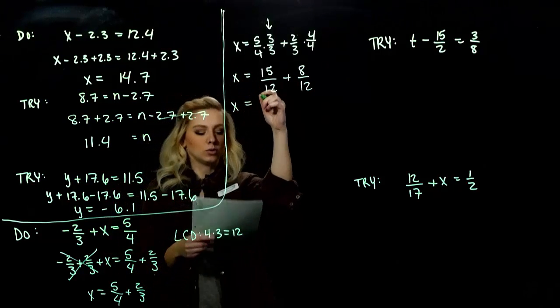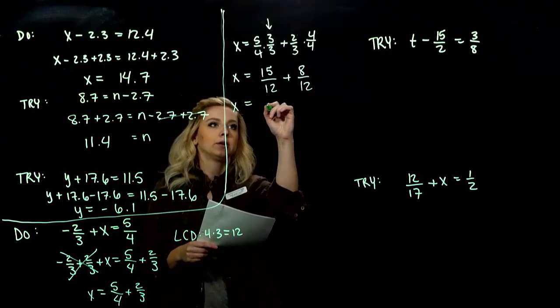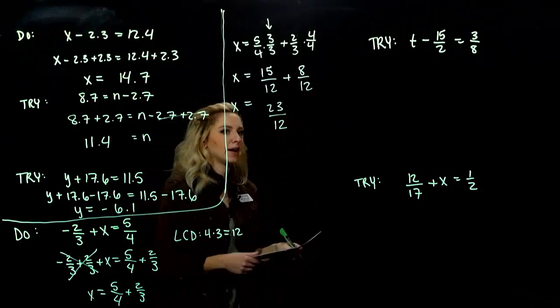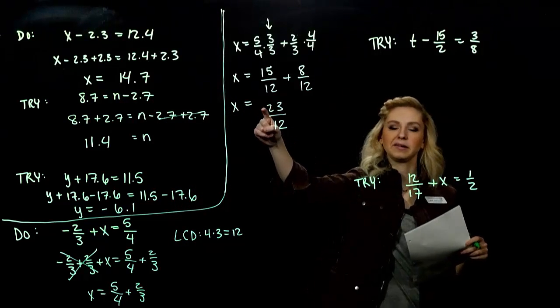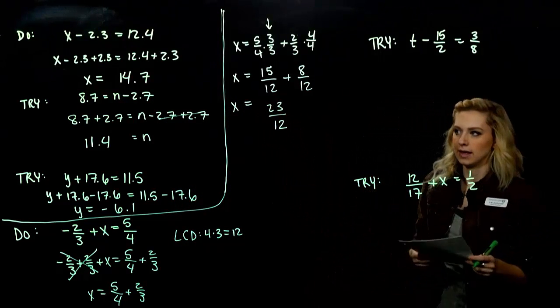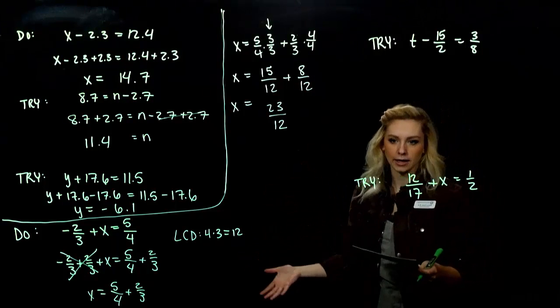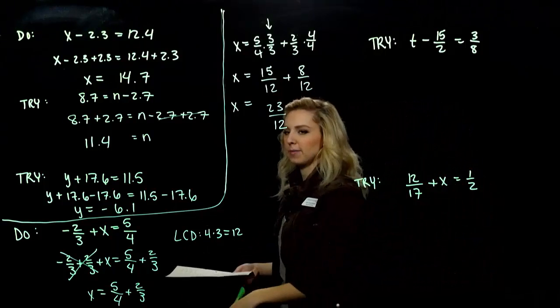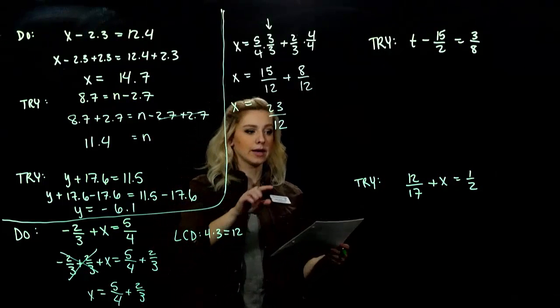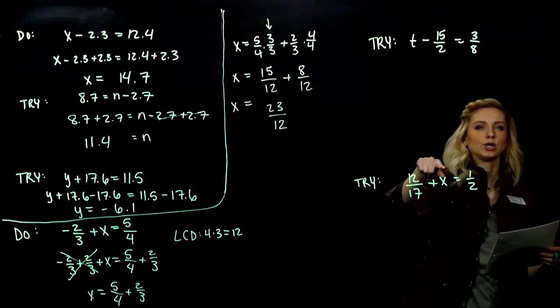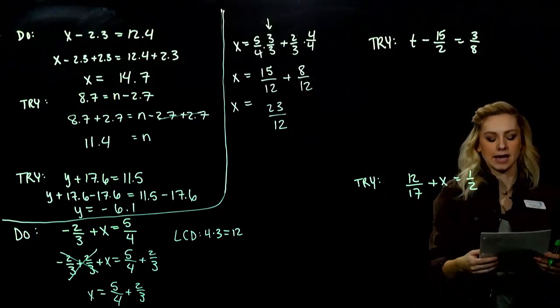So, x is equal to what? 23 over 12. And, we want to ask, can I simplify that any farther? So, I've got an even and an odd. So, I can't take out anything that's common. We can always plug back in and check again. But, we're not going to worry about it for right now. So, go ahead and take those last two tries. Solve for t, solve for x. You need common denominators to add them together.